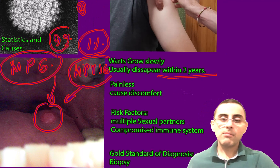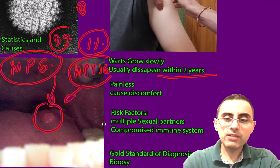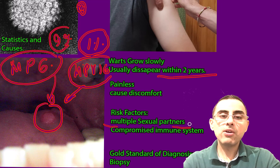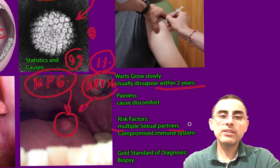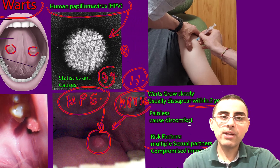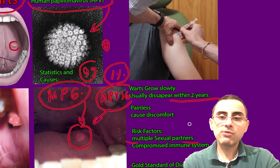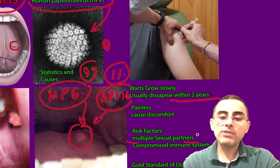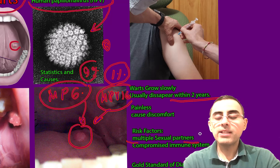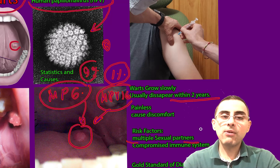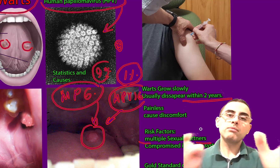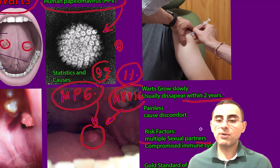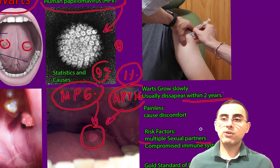The most important risk factor is multiple sexual partners, because papillomavirus infection — and especially oral papillomavirus — is considered a sexually transmitted disease. The most common route of transmission is the oral-genital route. However, it does not mean that all cases of oral warts are caused by sexual transmission; that is not correct.